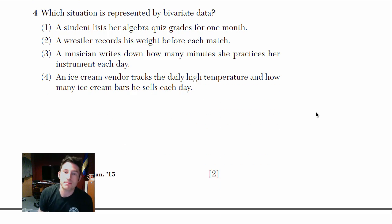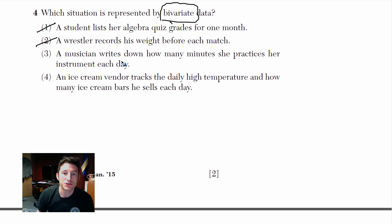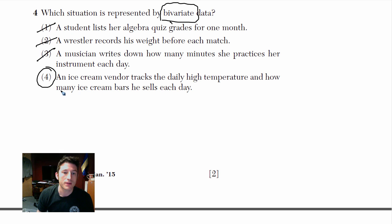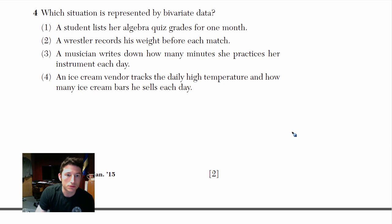Number 4: which situation is represented by bivariate data? Bivariate means two types of data. A student listing quiz grades — just one piece of data. A wrestler recording his weight — univariate, just one type. A musician writing down minutes she practices — again, just one type. But an ice cream vendor tracking daily high temperature and how many ice cream bars he sells — that's two pieces of data, bivariate. That's choice 4.